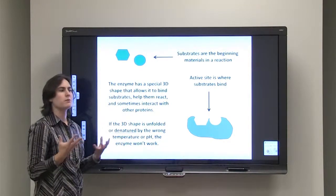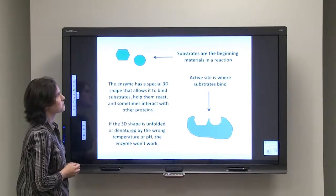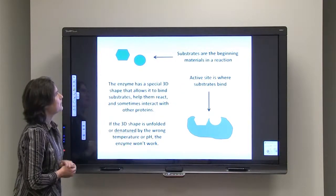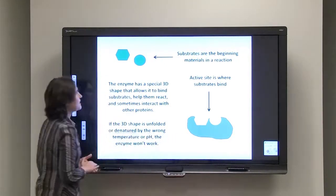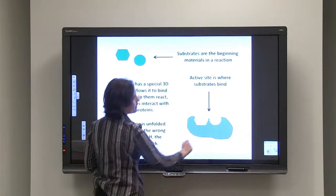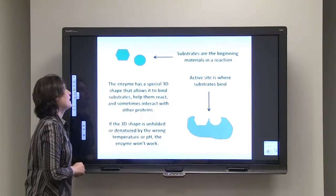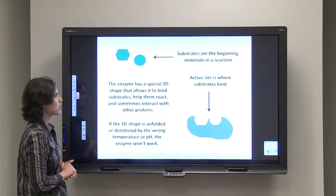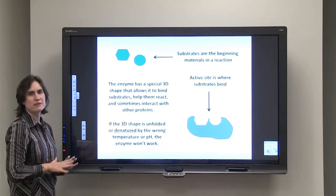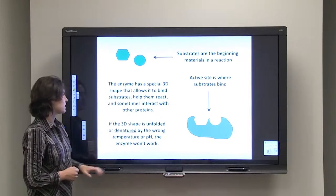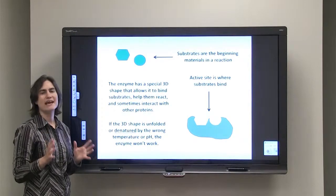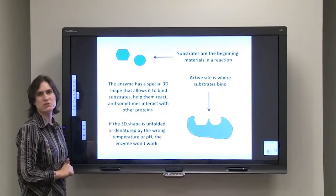We start off with materials called substrates — the beginning materials for a reaction. Here we have two substrates: a hexagon and a circle. Our enzyme, shown in blue, has a special three-dimensional shape that allows it to bind these substrates, with two different pockets that fit them. It also has a shape that lets these substrates react together. If that three-dimensional shape is unfolded, unwound, or denatured by temperature, pH, or something else, the enzyme won't work.